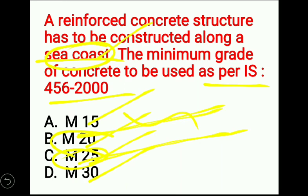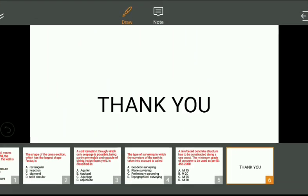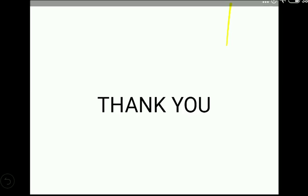Please study the question thoroughly for the conditions given. The condition here is a seacoast, so the minimum grade of concrete as per IS 456-2000 for a seacoast structure is M25. M25 is the correct answer. Thank you for watching this video — please like, comment, and share with your friends.